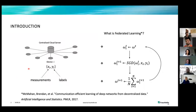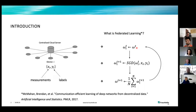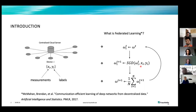Federated learning involves a distributed system of several devices connected to a central cloud server. Each device has its local data set composed of measurements and labels. In the training procedure, model weights omega are sent from the central cloud server to each device. Each device then computes an optimization operation with its local data to improve the model and sends it back to the central server for global aggregation, iterating until the required accuracy is achieved.